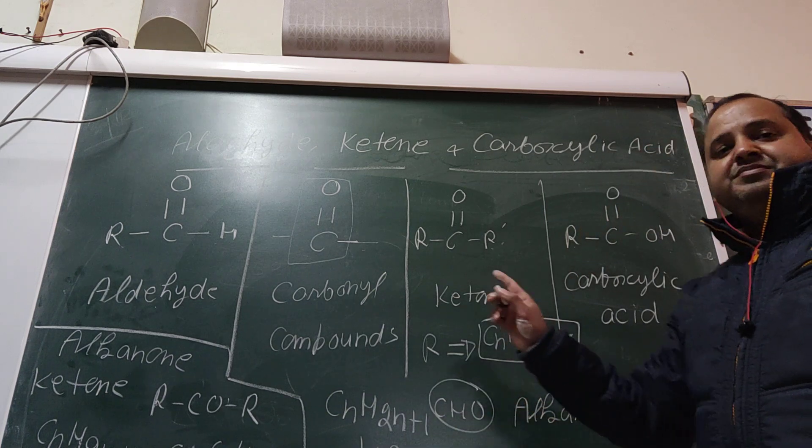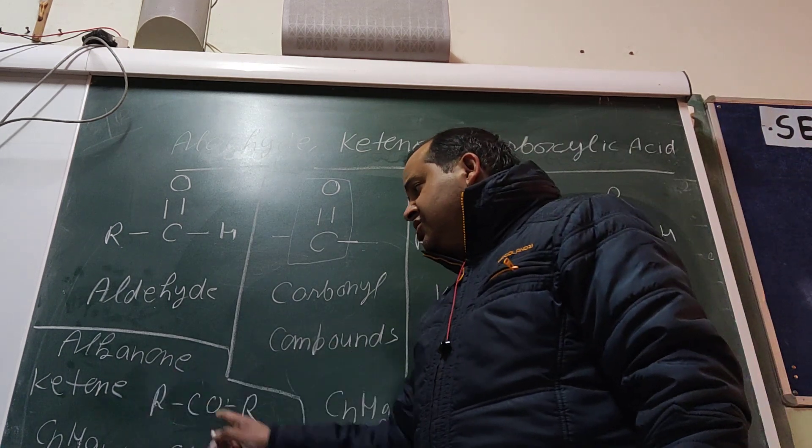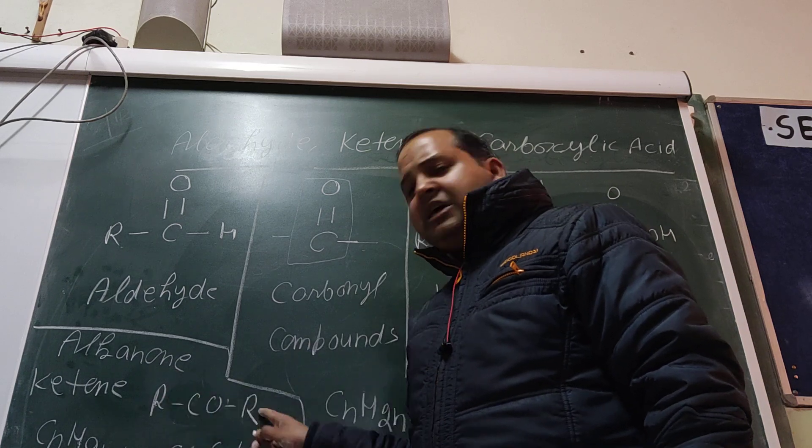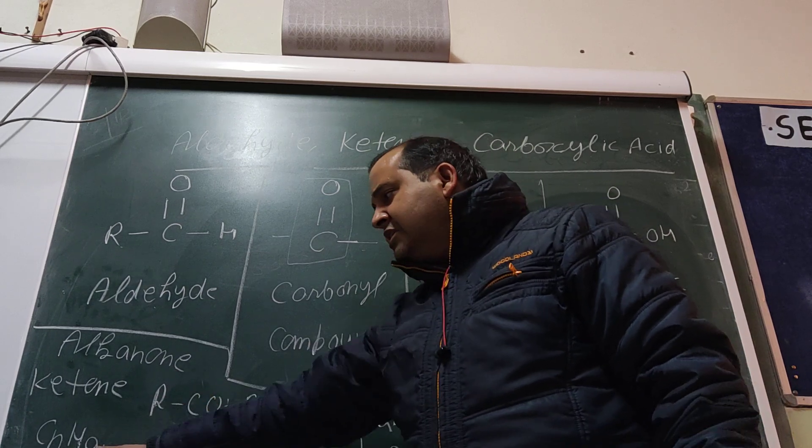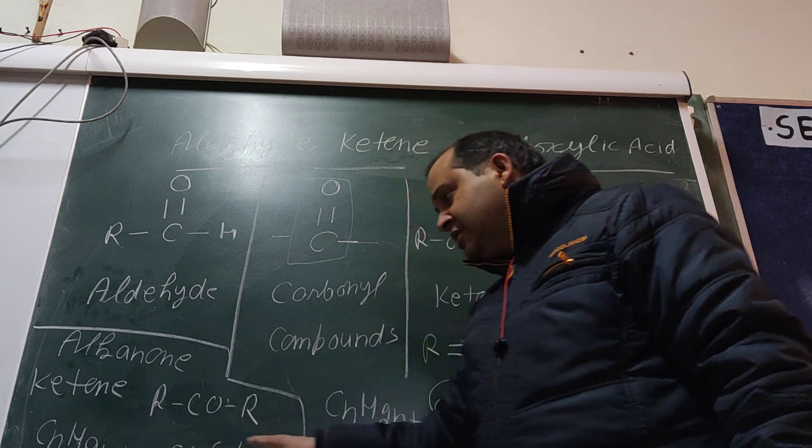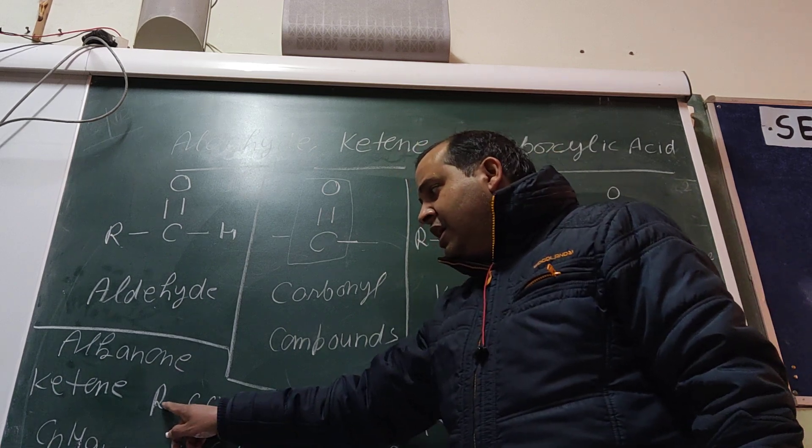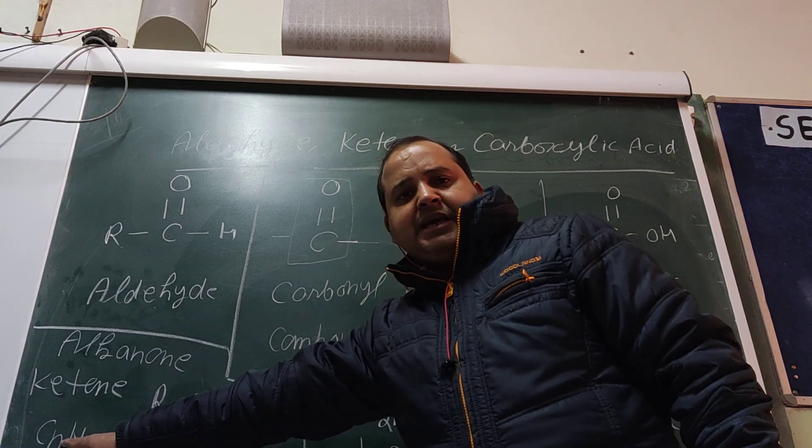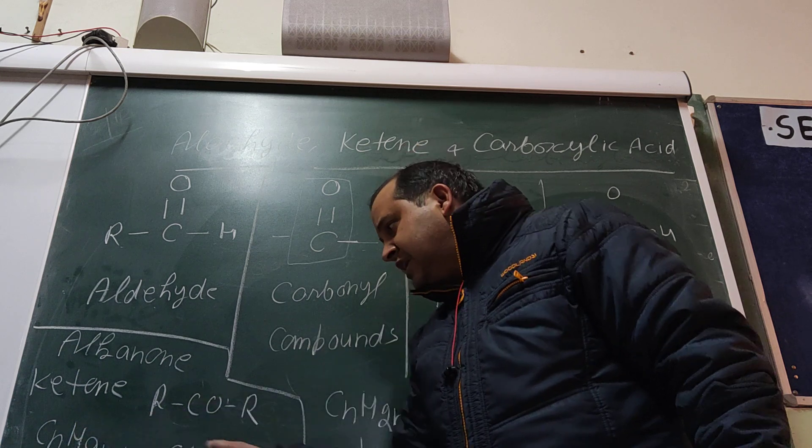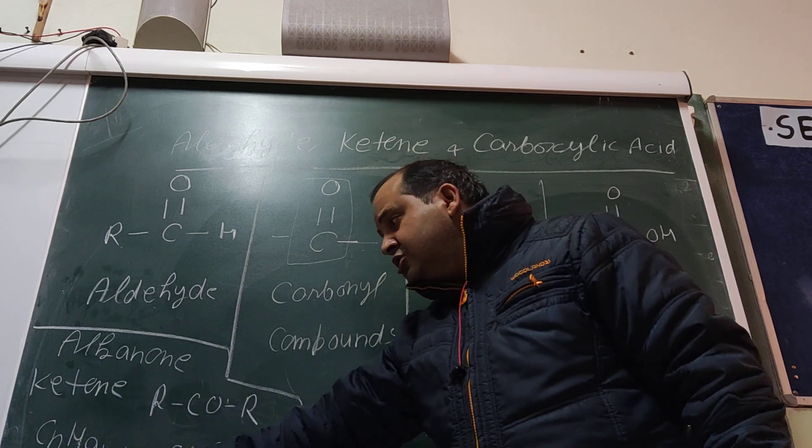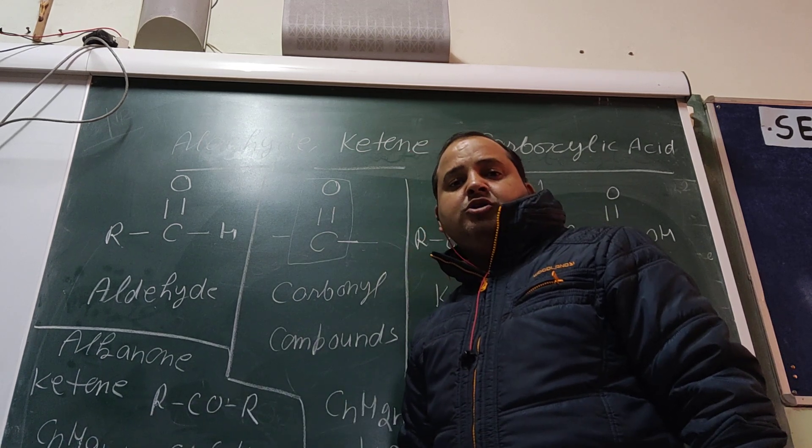For ketones, the general name is alkanone. On both sides we have R. This R is CnH2n+1 on both sides. In this case, n value can be taken as one on both sides, so this becomes propanone.